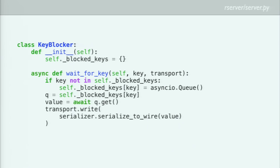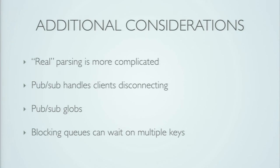That is basically how you would do blocking list pops — the same thing applies for BLPOP and BRPOP. There are a few additional considerations I didn't have time to cover. Real parsing is more complicated: I assumed we get all data as a single request, but realistically you get partial data, feed the parser, and it tells you when it has a complete command. PubSub can handle clients disconnecting via the connection_lost method on the protocol. And blocking queues can actually wait for multiple keys — for that, I couldn't use asyncio.Queue and had to go more low-level using asyncio.Future.